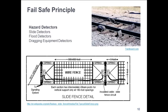How do hazard detectors play into the fail-safe concept? There are different kinds of detectors: slide detectors, flood detectors, and dragging equipment detectors. These will basically shunt the rails or break the track circuits. Like a train on the tracks, the detectors will keep the electricity from traveling through the relay, so gravity brings the armature down and the signals go to stop.